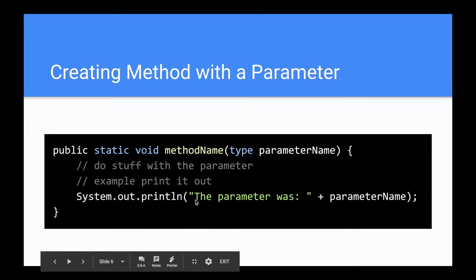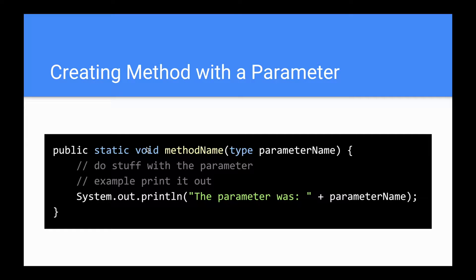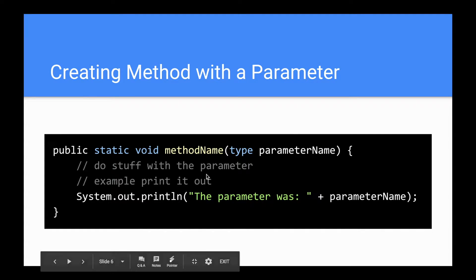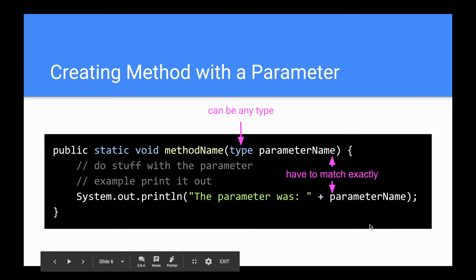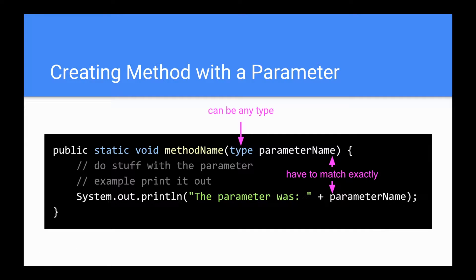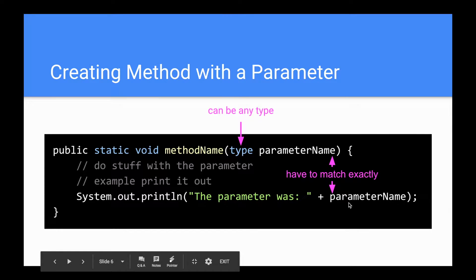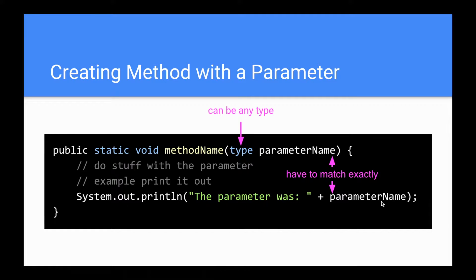Here's an example of the syntax for a method with a parameter. It's public static void — for now, because none of our methods have actual return values — and then method name, the type of the parameter (which can be int, double, byte, float, any of those), and then the parameter name. Inside the braces you do stuff with the parameter, like printing it out. The type can be any type, and the type and parameter name have to match exactly. Having a parameter is like having a variable declared for the method, and you use it with the exact matching name inside the method to actually get its value.